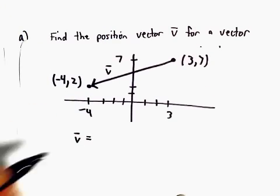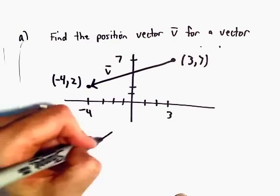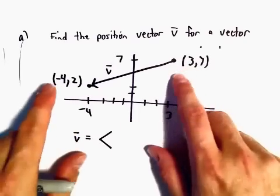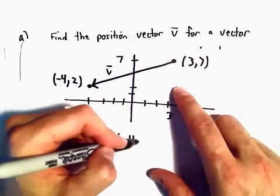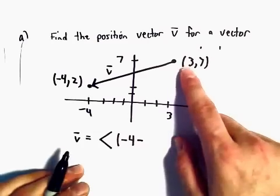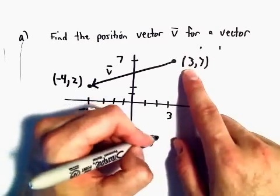What we do is we take our—so I'm going to look at the x-coordinates. We take the stopping point, which was negative 4, and we subtract away whatever the starting point was, which was the x-coordinate of 3.